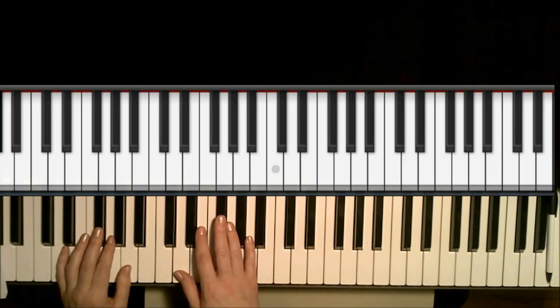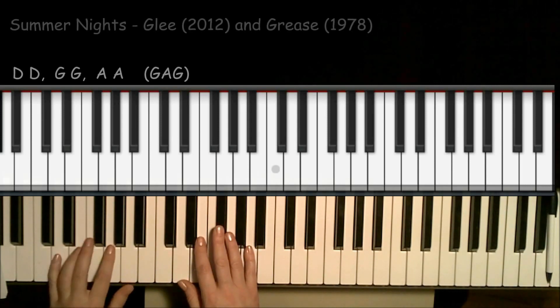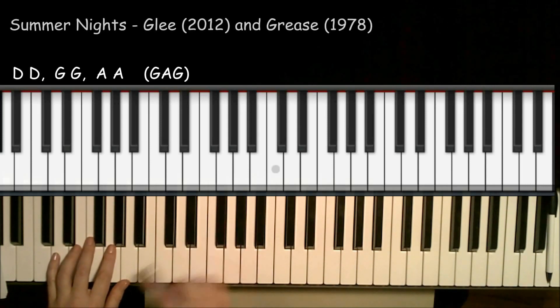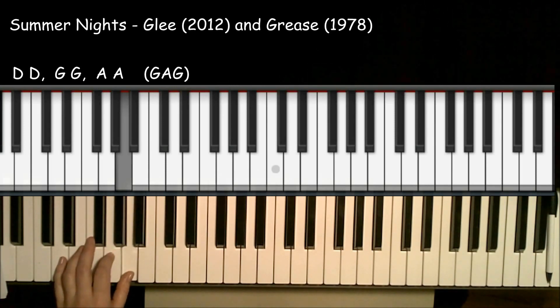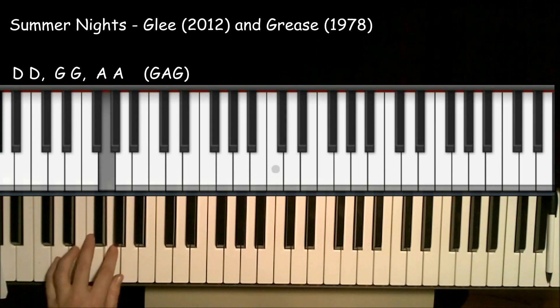All right, so here are the chords you need to play Summer Nights, and it starts off with the bass line: D, D, G, G, A, A, G, A, G.